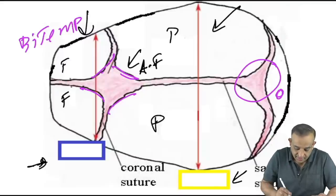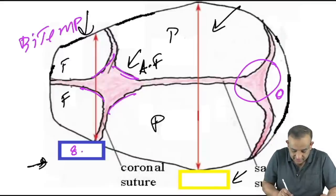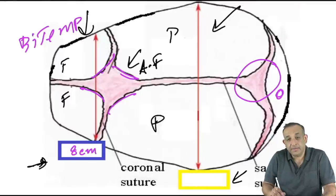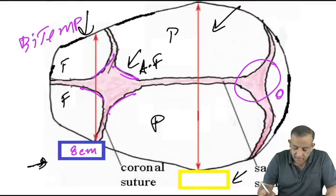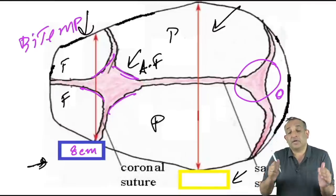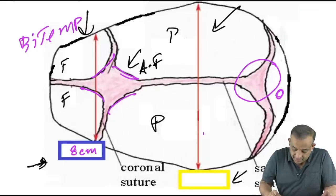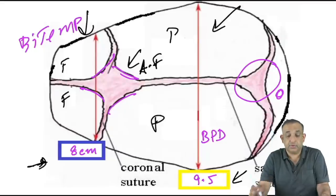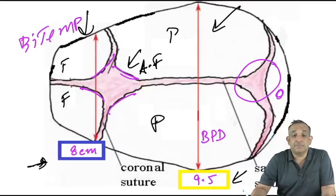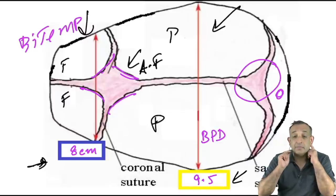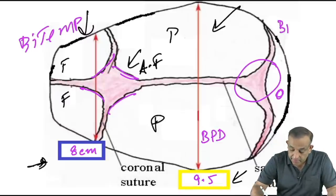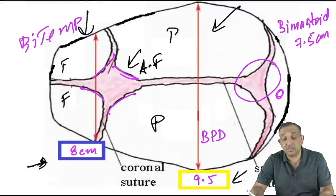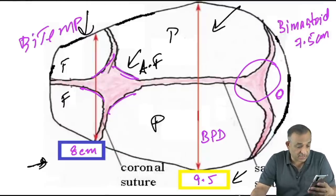This diameter is the bitemporal diameter, which is 8 centimeters. The broadest diameter of the fetus is the biparietal diameter at 9.5 centimeters. So broadest is 9.5 and bitemporal is 8. The narrowest transverse diameter is the bi-mastoid at 7.5 centimeters.